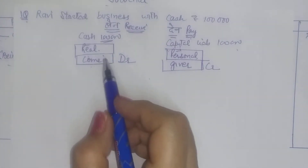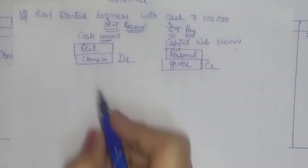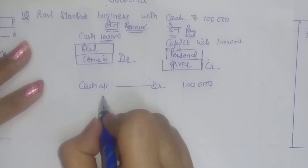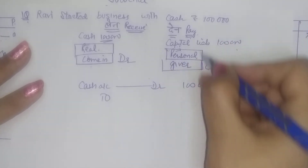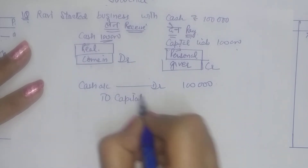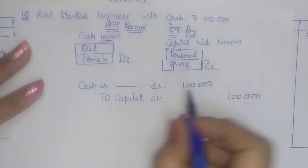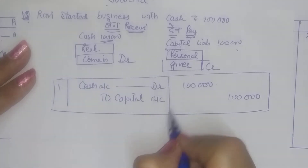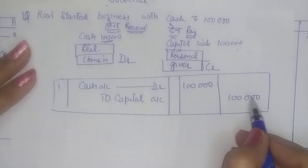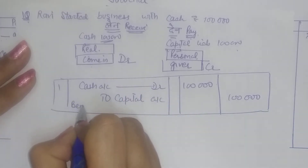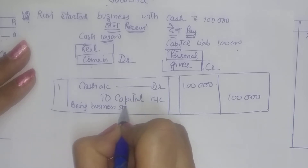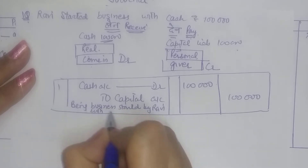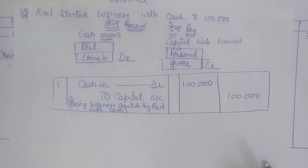So our journal entry is: Cash Account — Debit — ₹1,00,000. To Capital Account — Credit — ₹1,00,000. So in the journal format, the entry will look like this: serial number 1, ledger folio column, debit and credit amounts. Narration: 'Being business started by Ravi with cash' or 'Being capital invested by the owner.' This is how you can record the entry.